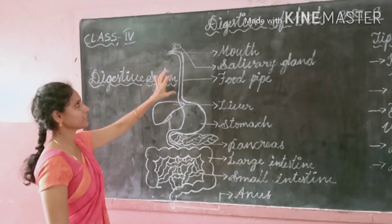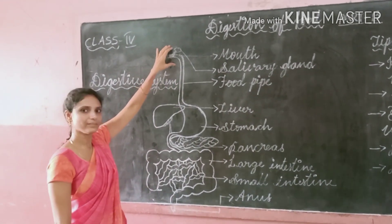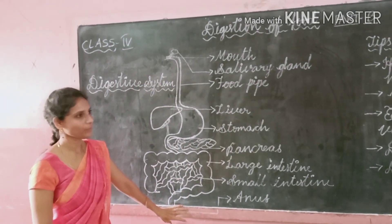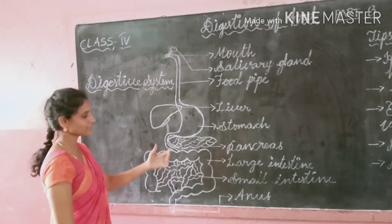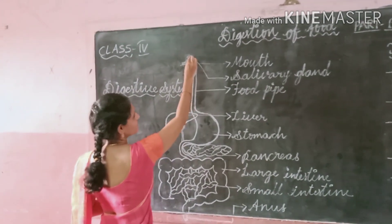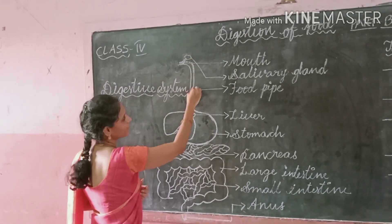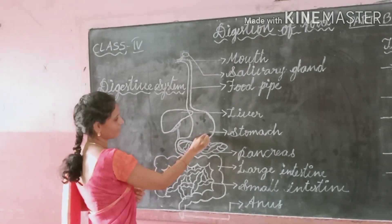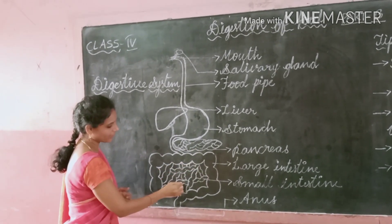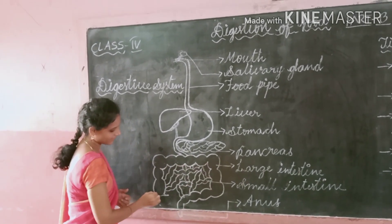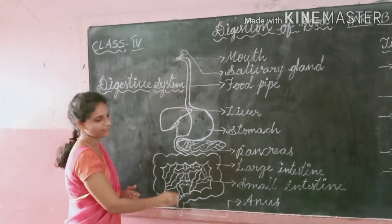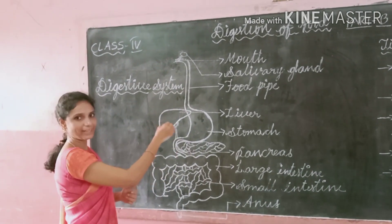This digestion process begins with the mouth. This is the digestive system of the human being. The parts involved in digestion are: mouth, salivary glands, food pipe, stomach, liver, pancreas, small intestine, large intestine, and anus.